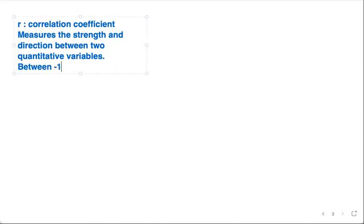It's between negative one and one inclusive, meaning it can be one or negative one. The closer it is to negative one or one, the stronger the relationship is. The closer it is to zero, the weaker the relationship is overall.